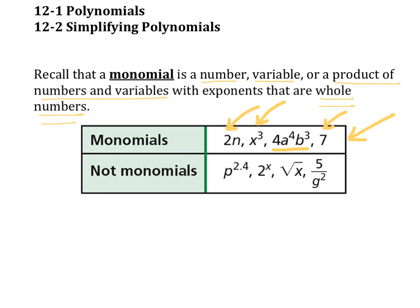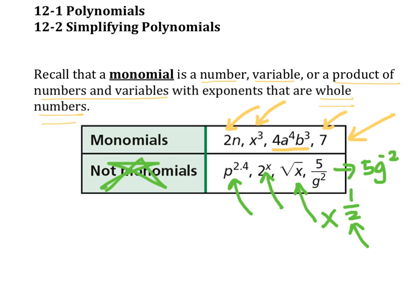Now let's look at the not-monomials. p to the 2.4 is not a monomial because our exponent is not a whole number. 2 to the x is not a monomial because our exponent can't be a variable. The square root of x can be written as x to the 1 half power, which is not a whole number. And 5 over g squared can be written as 5 times g to the negative 2 — negative 2 is not a whole number.